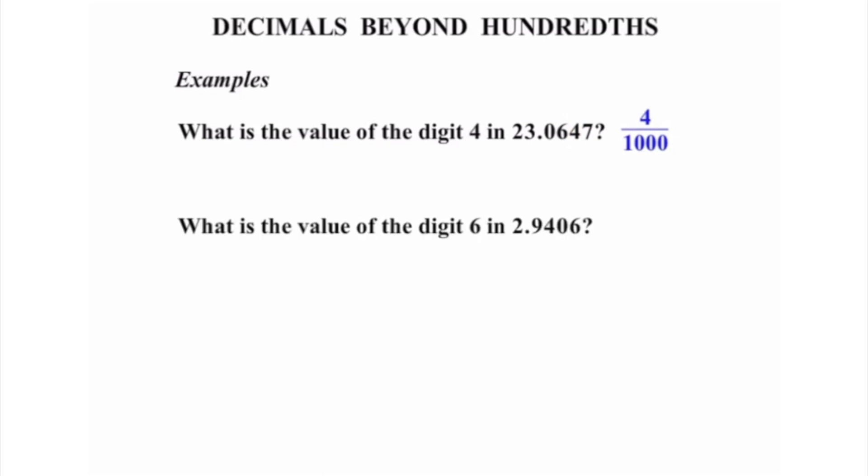What is the value of the digit 6 in 2.9406? There's the 6, that's the one we're after. Let's start with the whole number part. That 2 is in the ones column, so ones, tenths, hundredths, thousandths, and then ten thousandths. So that 6 has a value of 6 over 10000. Terrific.